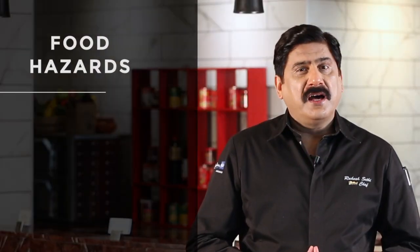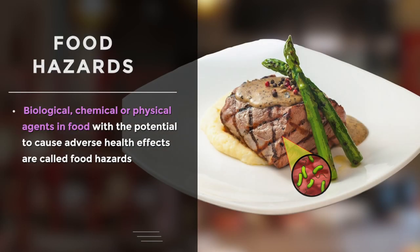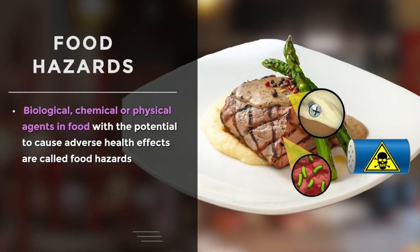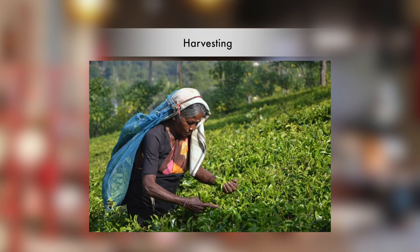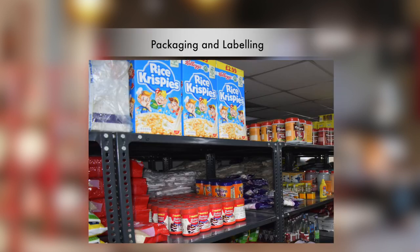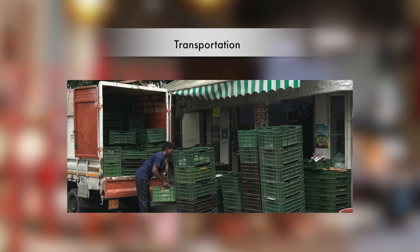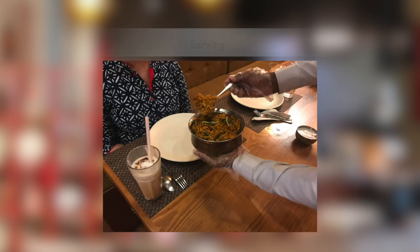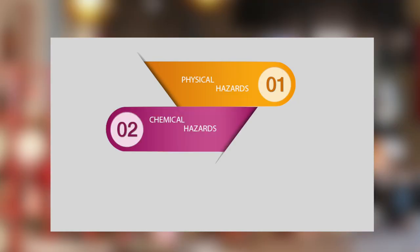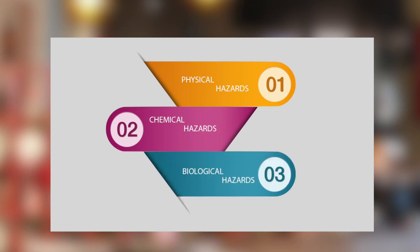To understand food safety in depth, we need to understand what are food hazards. Biological, chemical or physical agents in food with the potential to cause adverse health effects are called food hazards. Hazards may be introduced into the food supply anytime during harvesting, formulation and processing, packaging and labeling, transportation, storage, preparation and serving. There are three types of hazards: physical hazards, chemical hazards and biological hazards.